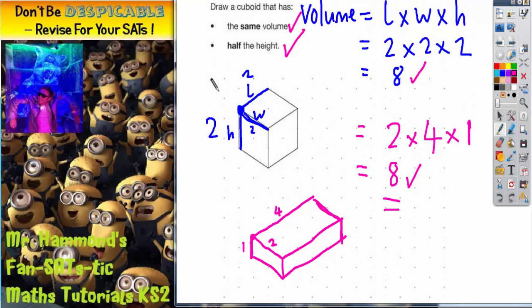So there you have it—there's our finished answer. It's got the same volume because it's 2 by 4 by 1, which is 8. It's half the height because the height of the original one was 2, and half of that is 1. So our cuboid has satisfied these two conditions. There are other ways of drawing it, but that's just one way.